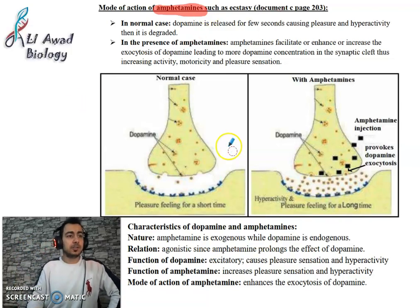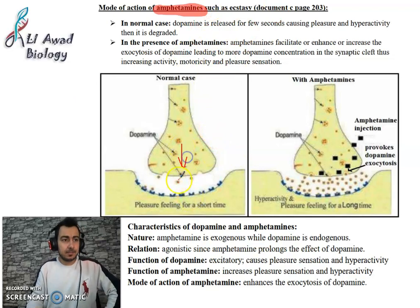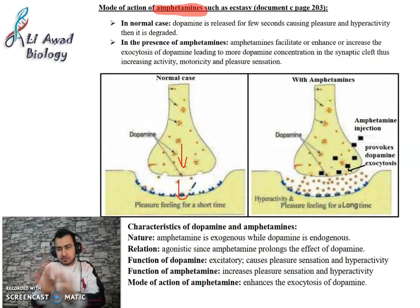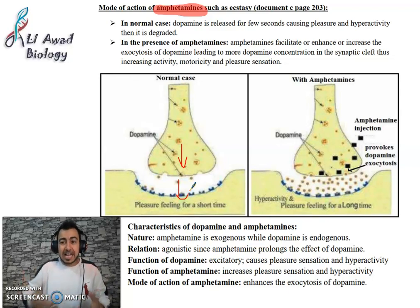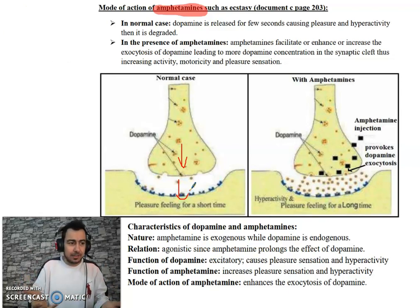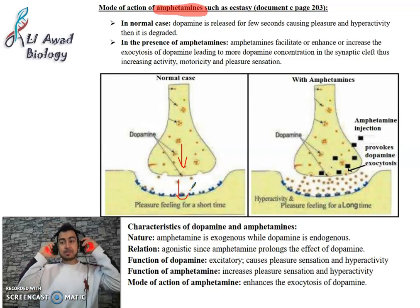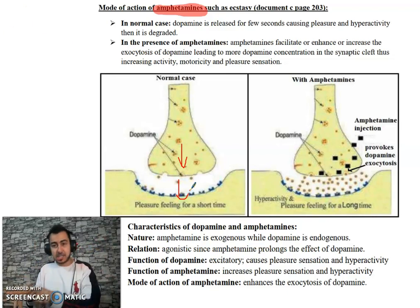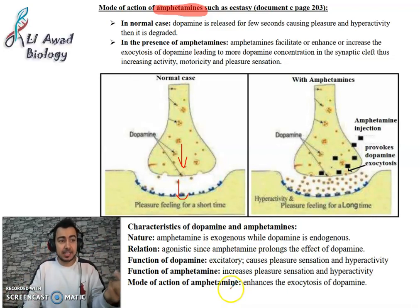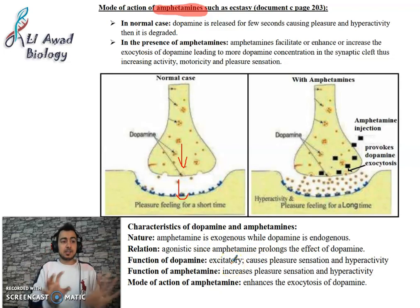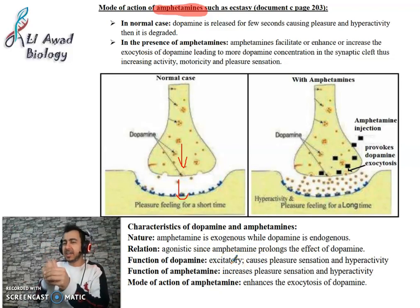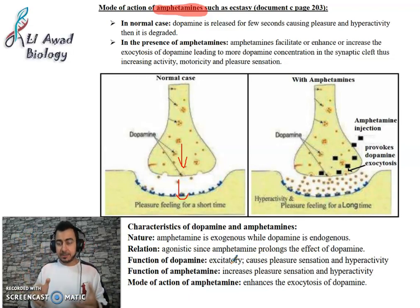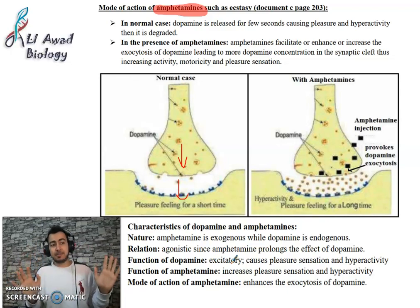In the normal case, dopamine is released. When dopamine binds to its receptors you feel pleasure, and also hyperactivity. Dopamine has two roles: in some places of the brain it causes pleasure sensation, and in other places it causes activity — it makes a person energetic and active.